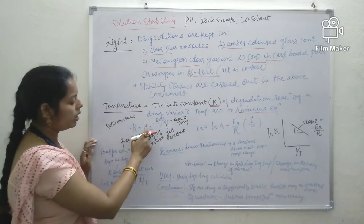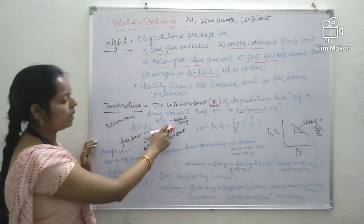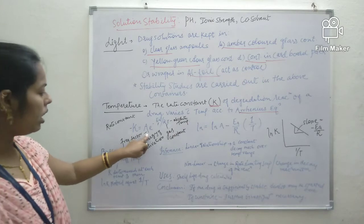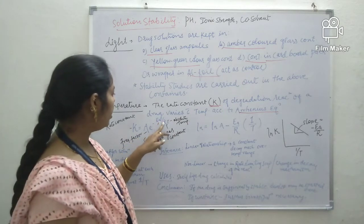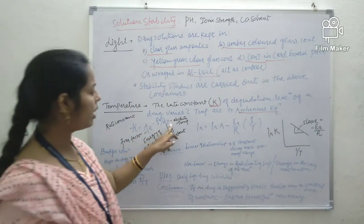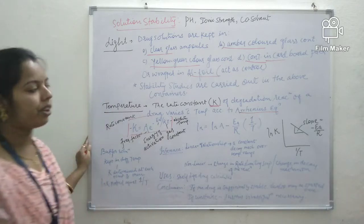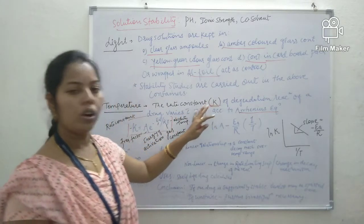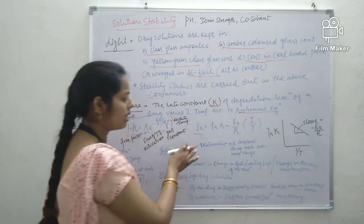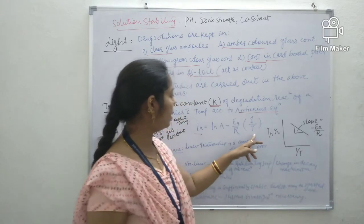As per the Arrhenius equation: K equals A times e to the power of minus Ea divided by RT, where K is the rate constant, A is the frequency factor, Ea is the energy of activation, R is the gas constant, and T is the absolute temperature. Taking the anti-log gives: log K equals log A minus Ea divided by R times 1 over T.